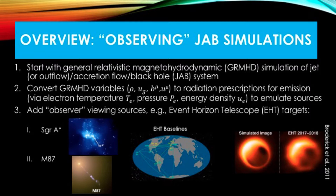The magnetic four-vector B-mu, the fluid four-velocity U-mu, and we convert these outputs of GRMHD simulations into quantities related to the emission such as the electron temperature Te, the electron gas pressure of relativistic electrons P, and the electron gas energy density UE.